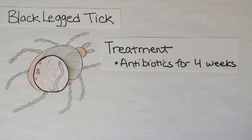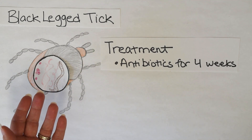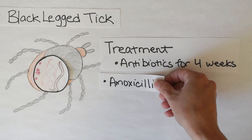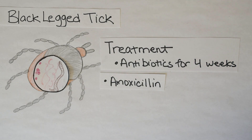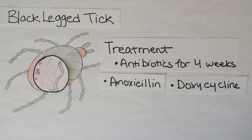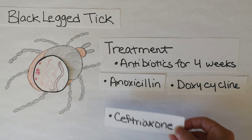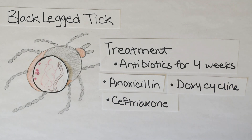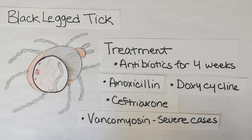If you missed a tick, the treatment is antibiotics for three to four weeks. The type depends on whether you have a single infection with Borrelia or a co-infection. The first line of defense is amoxicillin — pretty standard, the kind your kid probably got for an ear infection. It works great for a single infection. If you have a co-infection, you might need doxycycline or ceftriaxone, which are second-generation antibiotics more likely to work on multiple types of bacteria. For a really bad or antibiotic-resistant infection, you may need to be hospitalized and given vancomycin — this is for severe cases only.